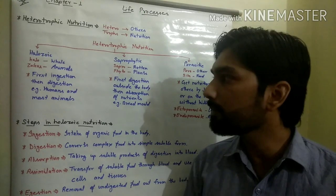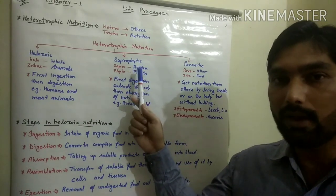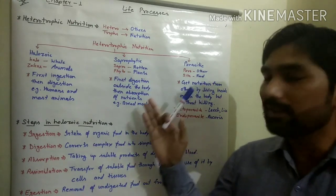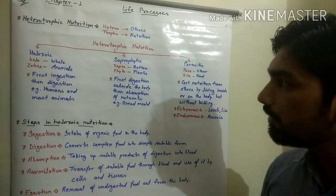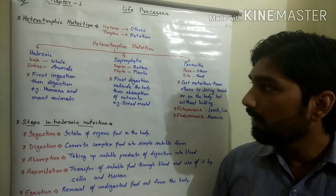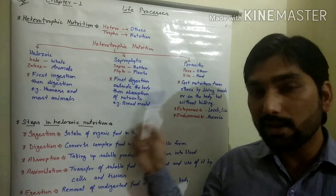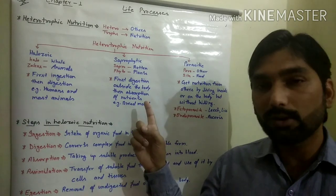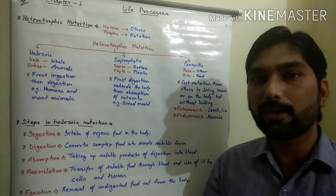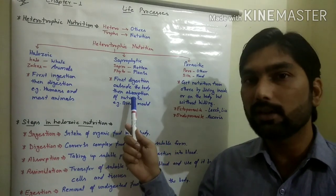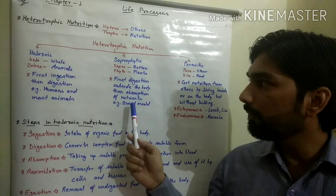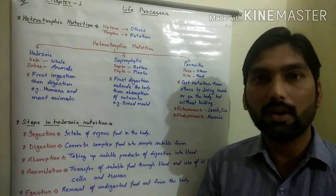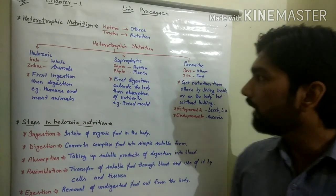The next method is saprophytic nutrition, where 'sapro' means rotten and 'phyto' means plants. These organisms derive nutrition from dead and decaying matter. They first digest this matter by releasing enzymes outside their body, so digestion occurs externally, and then they absorb the nutrients. Examples include bread mold and mushroom.